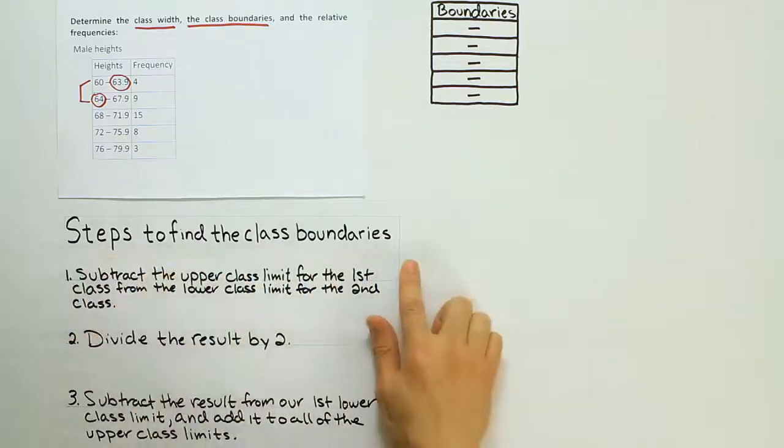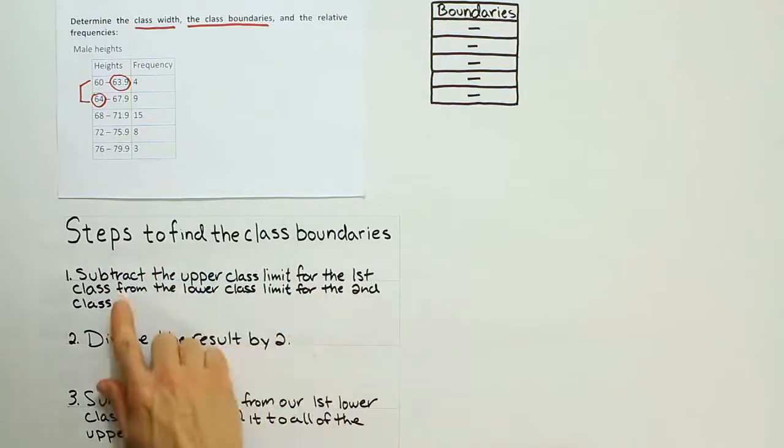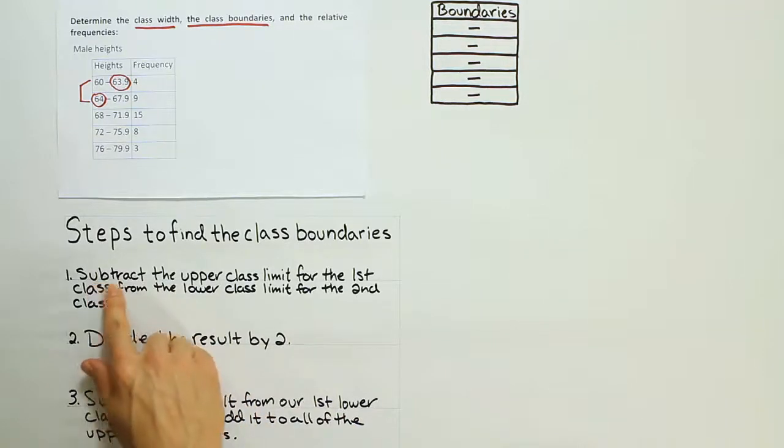Okay, so once these are all written down, let's go over them and see how they're done. They're actually very easy to do, probably harder to write than actually to do. So the first one says subtract the upper class limit for the first class from the lower class limit for the second class.